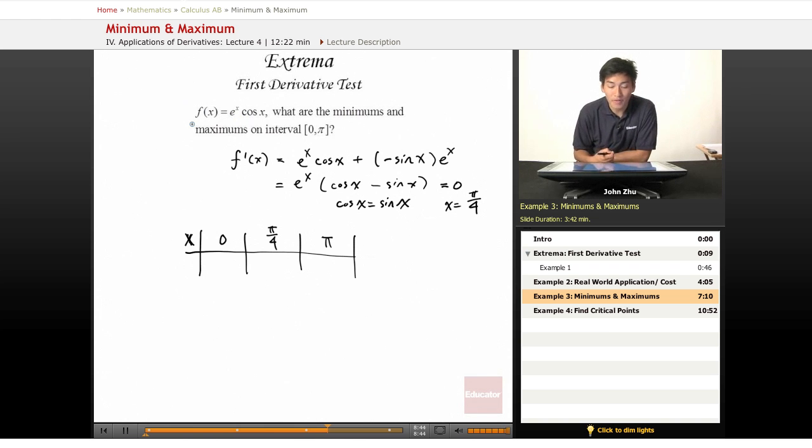So we've already found the critical point, so that means there is a direction change at pi over 4, or maybe not a direction change, just the slope is 0, and then it continues in the same path after. But either way, this is the only critical point at pi over 4. So let's test the values at 0, pi over 4, and pi to see what the max and mins are.